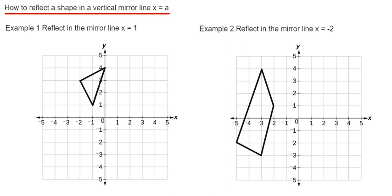So example 1 then, we've got to reflect the triangle in the mirror line x equals 1. So the line x equals 1 will go through the point 1 on the x axis. So let's draw this vertical line in down here.